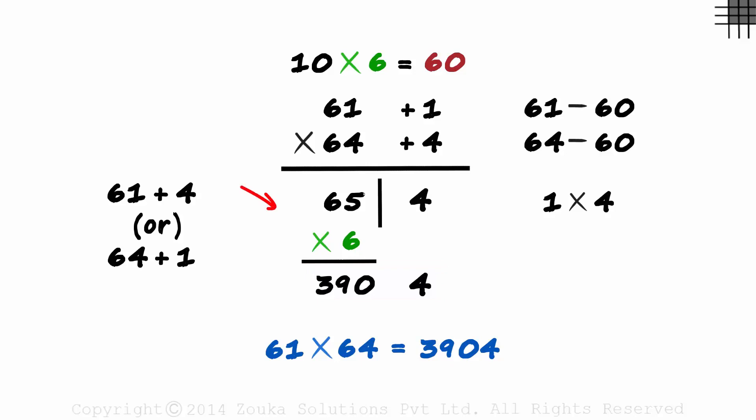There was just one additional step here: multiplying the number on the left with the multiplying factor. So find the base, find the deviations, find the sum, find the product, and then multiply the left hand figure with the multiplying factor.